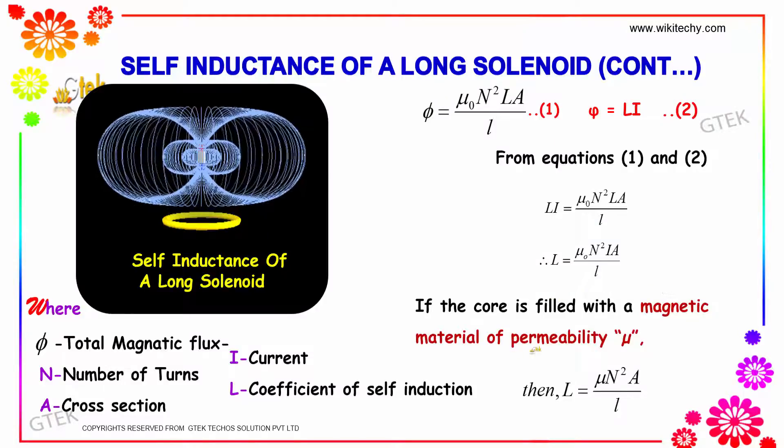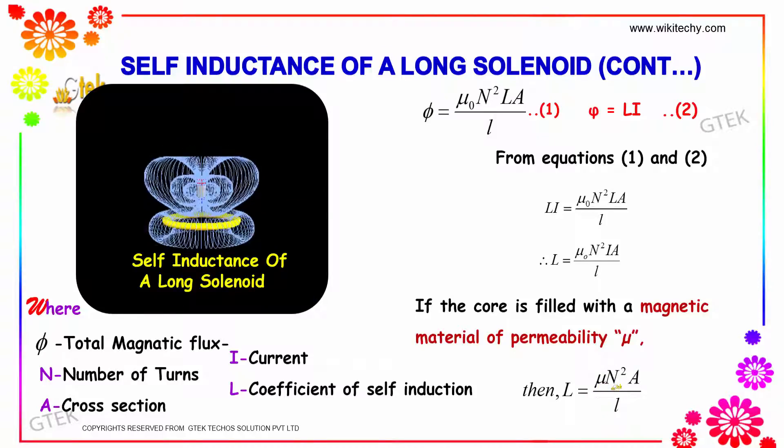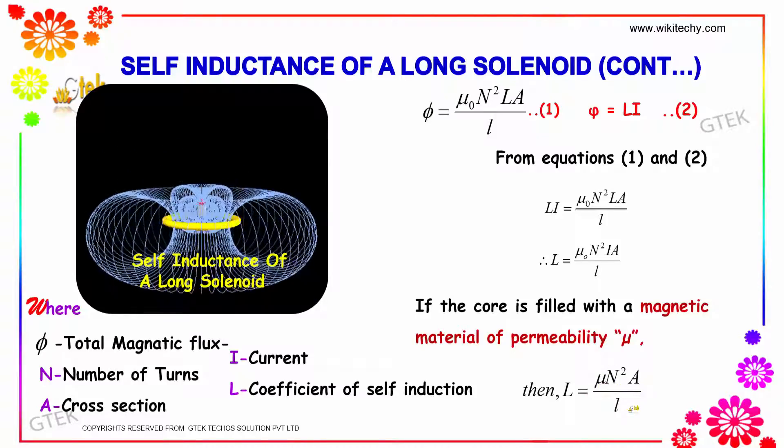If the core is filled with a magnetic material of permeability μ, then L equals μN²A divided by L.